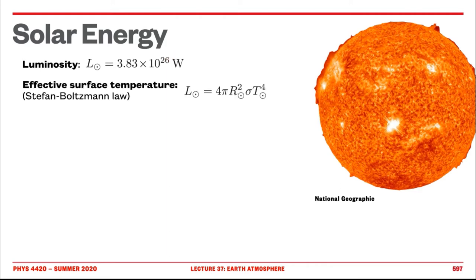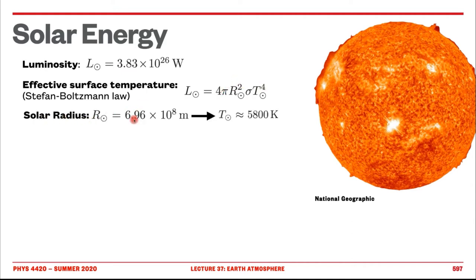We can actually calculate the surface temperature of the Sun using the Stefan-Boltzmann law: energy is sigma T to the power 4, sigma being the Stefan constant. The luminosity gives the energy per square meter — sigma T^4 — and if we multiply this by the surface area of the Sun's sphere, we get the luminosity. Supposing we know the solar radius, we can calculate the temperature of the Sun, which is 5,800 Kelvin. This is pretty hot and will come up often as we describe the black body radiation of the Sun.